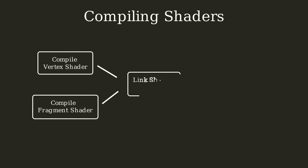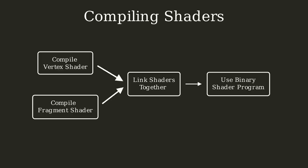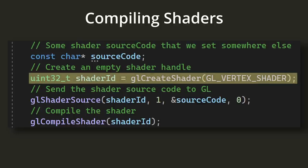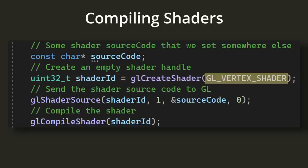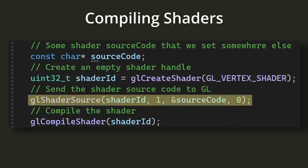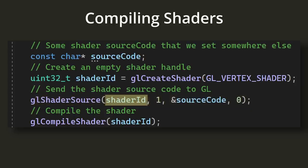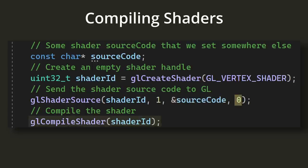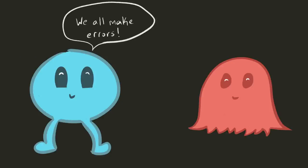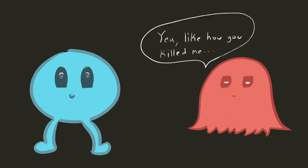First, we need to talk about how to execute this code on the GPU. We need to go through a few steps to compile and link our shaders together, similar to a C program. To compile a shader, we first create a shader object using glCreateShader, specifying the shader type. Next, we send the source code to the GPU — this function call expects the shader ID, the number of strings, a pointer to the array of strings, and a pointer to an array of string lengths (or null if strings are null-terminated). Finally, we call glCompileShader.